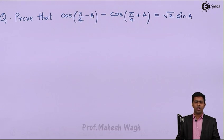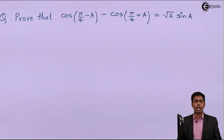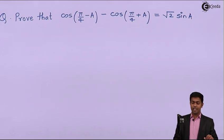Hello friends, in this problem we have to prove that cos(π/4 - A) - cos(π/4 + A) = √2 sin A. If you see the left hand side, all terms are cos, whereas on the right hand side the trigonometric function is sin.